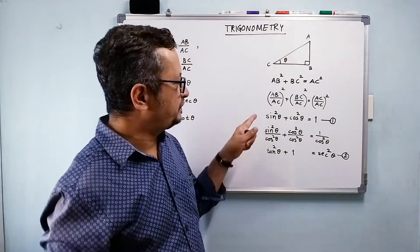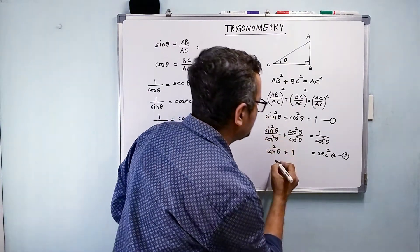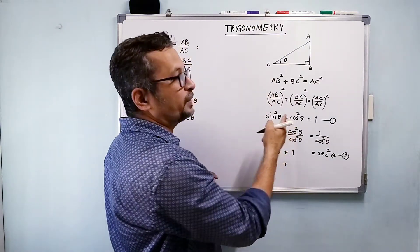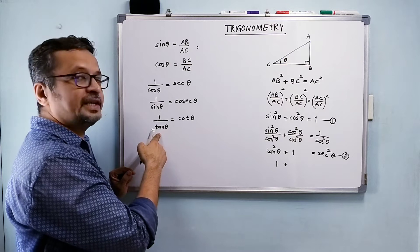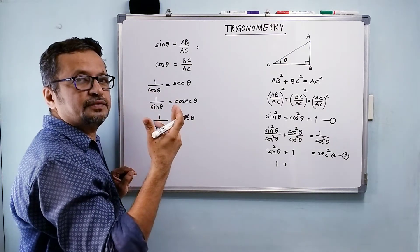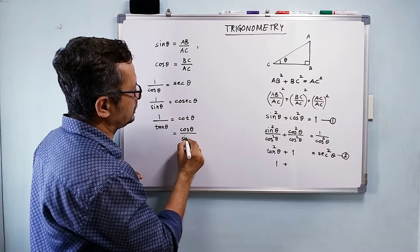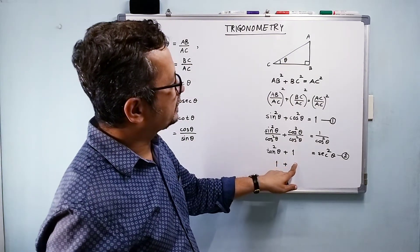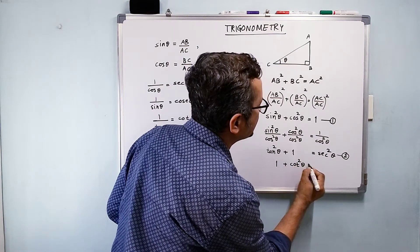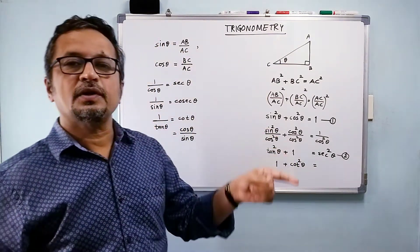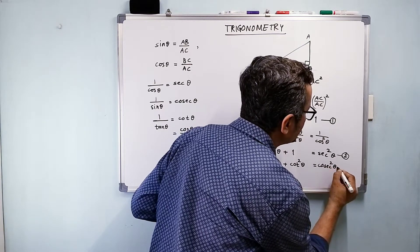Likewise, if I divide both sides of this equation by sin²θ, I get something else. It would be 1 plus cos²θ upon sin²θ. Now, reciprocal of tan theta is cot theta. Since tan theta is sine upon cos, reciprocal of sine upon cos is cos upon sine. So over here, I get cos²θ upon sin²θ, which is cot²θ. And reciprocal of sine squared gives cosec²θ. This is identity number 3.